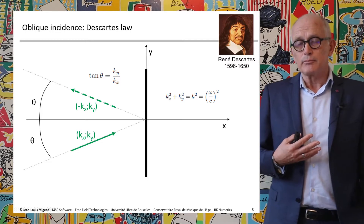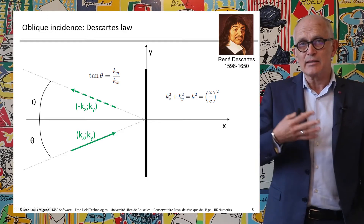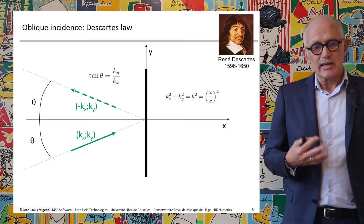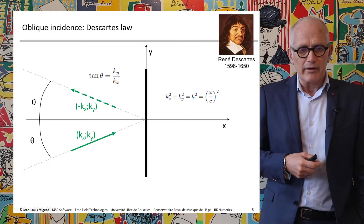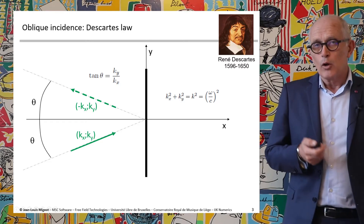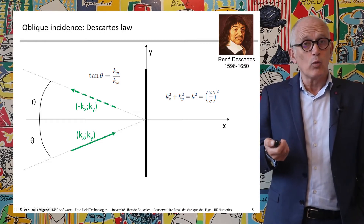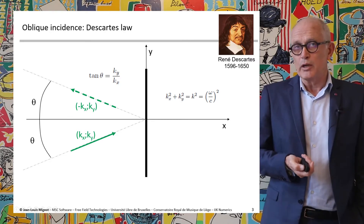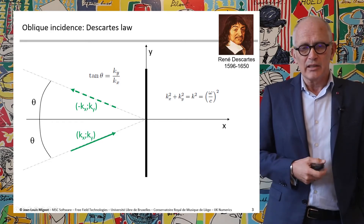If we look at this in terms of wave vectors in the 2D situation, the incident wave vector has kx and ky components. What Descartes says is that the reflected wave will have the same components, but the x component will change sign, so that the angle theta of the two vectors is identical. The components kx and ky are related to the wave number k, defined as omega divided by c, with the important relationship: kx² + ky² = k² = (omega/c)².